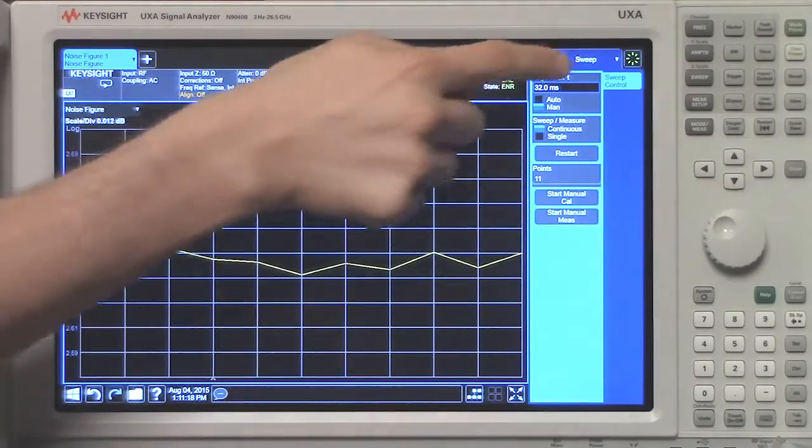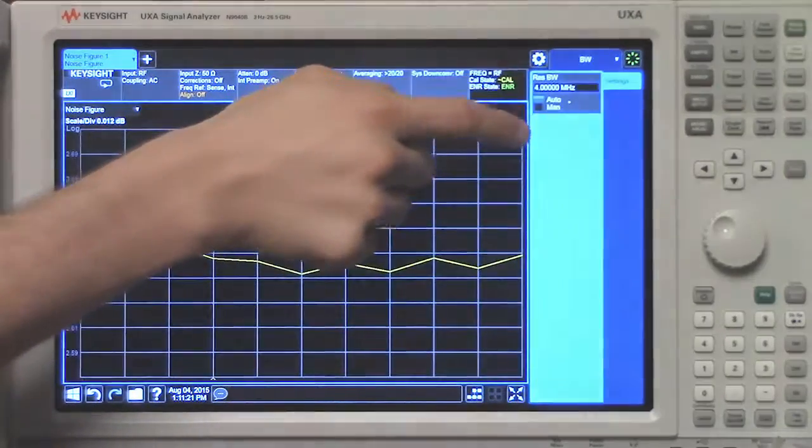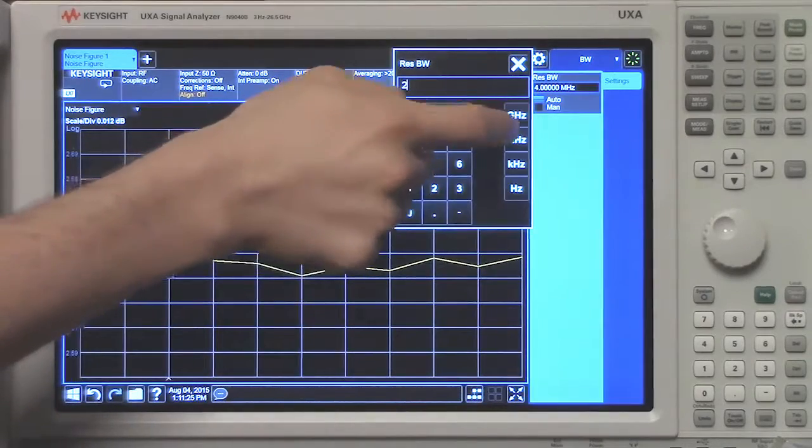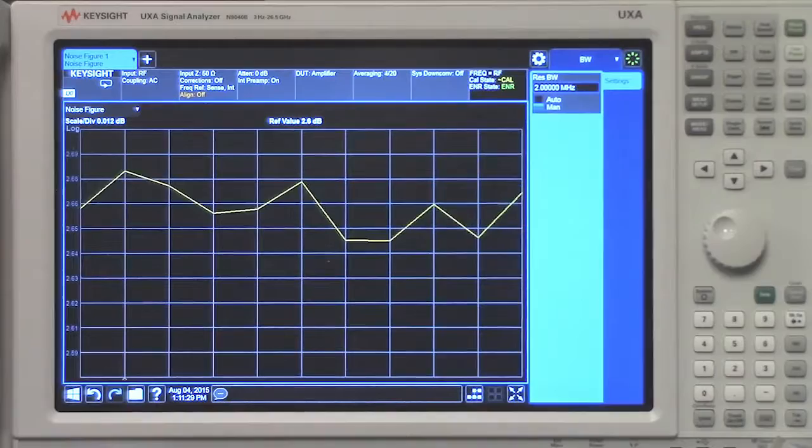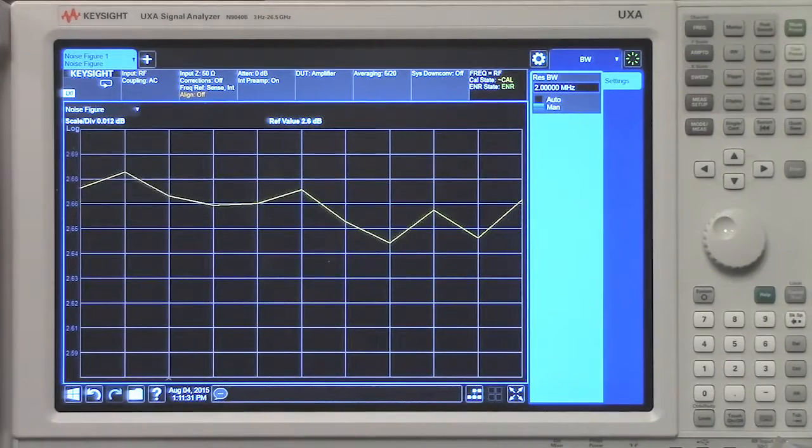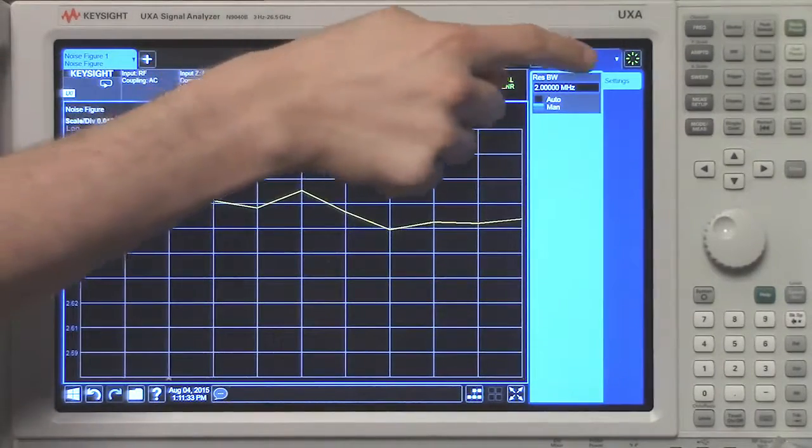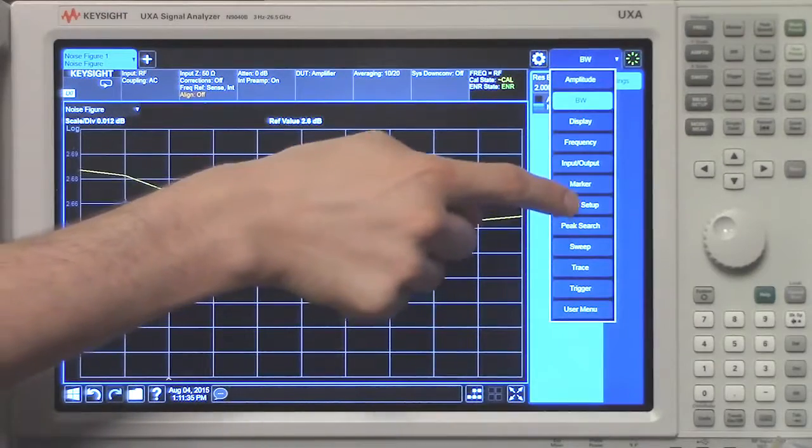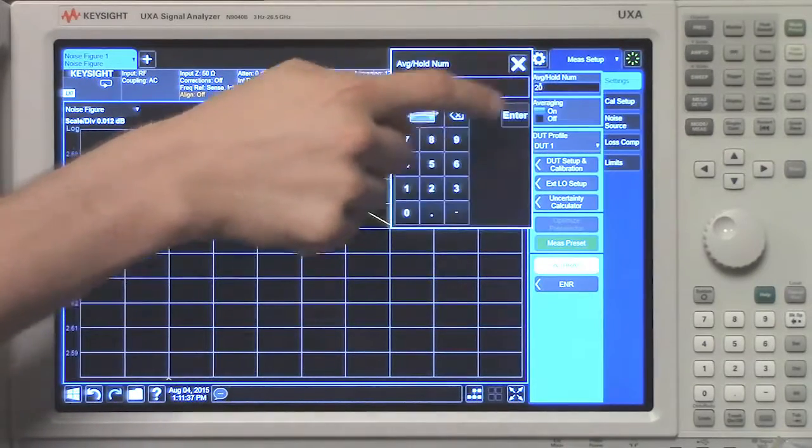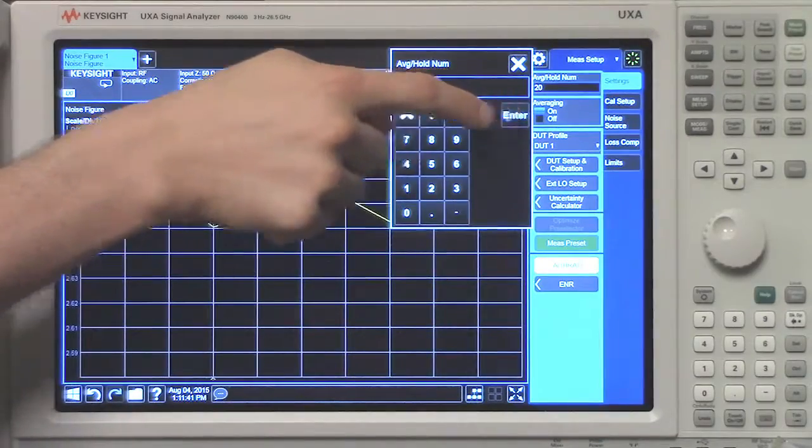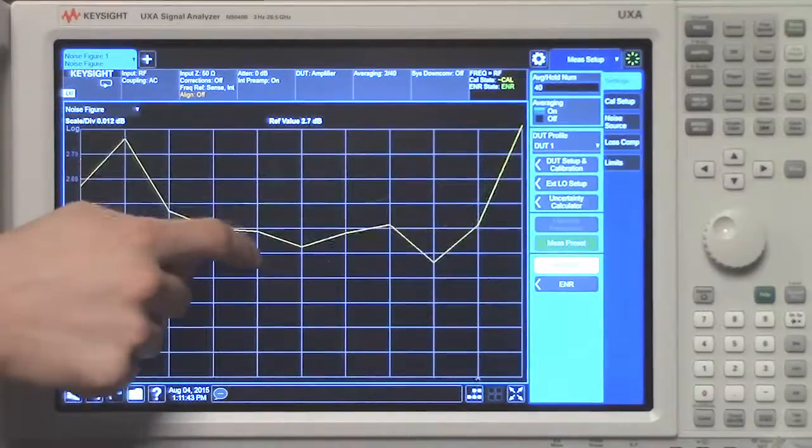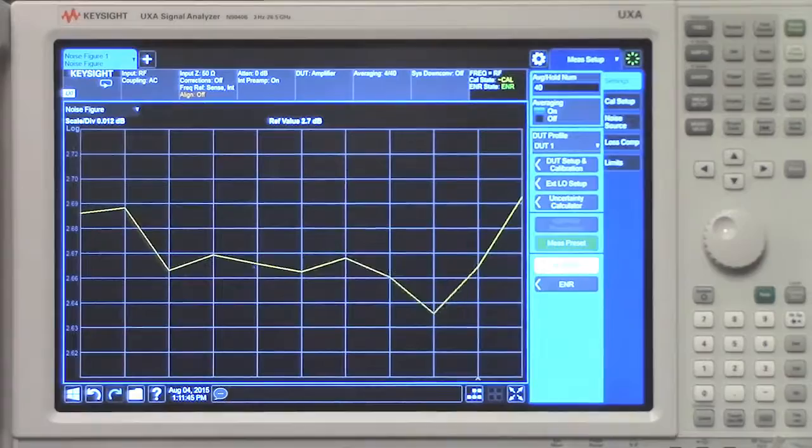Keep in mind that if you reduce your bandwidth, like let's say I reduced it down to 2 MHz, you're going to need to increase the number of averages to produce the same level of jitter on the display. So if I go to averages in measurement setup and increase this by a factor of 2, since I decreased the bandwidth by a factor of 2, you'll see that our trace is back to where it was before.